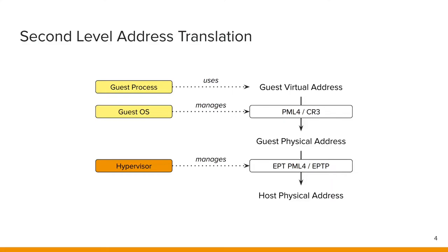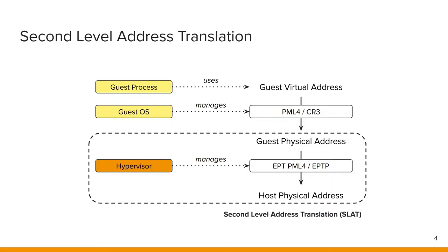There are implementations to manipulate these page tables using VMI, for example ALT-P2M in the Xen hypervisor. Typically, these implementations are used to hide injected code by manipulating the memory access permissions. For example, one can remove the read permission from a modified page and remap it to a benign page when the guest attempts to read it. These mechanisms are what we build upon and extend in our framework.